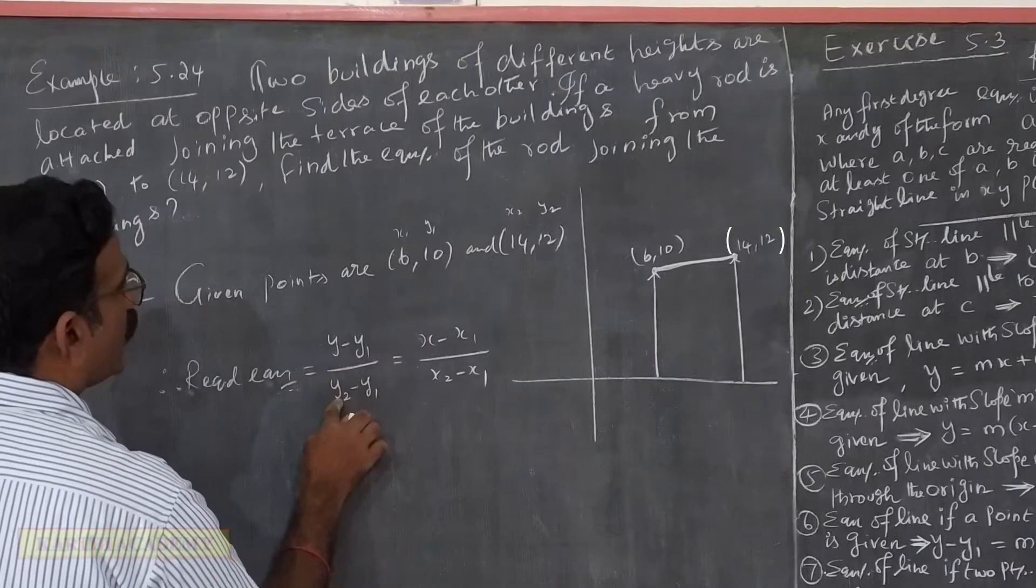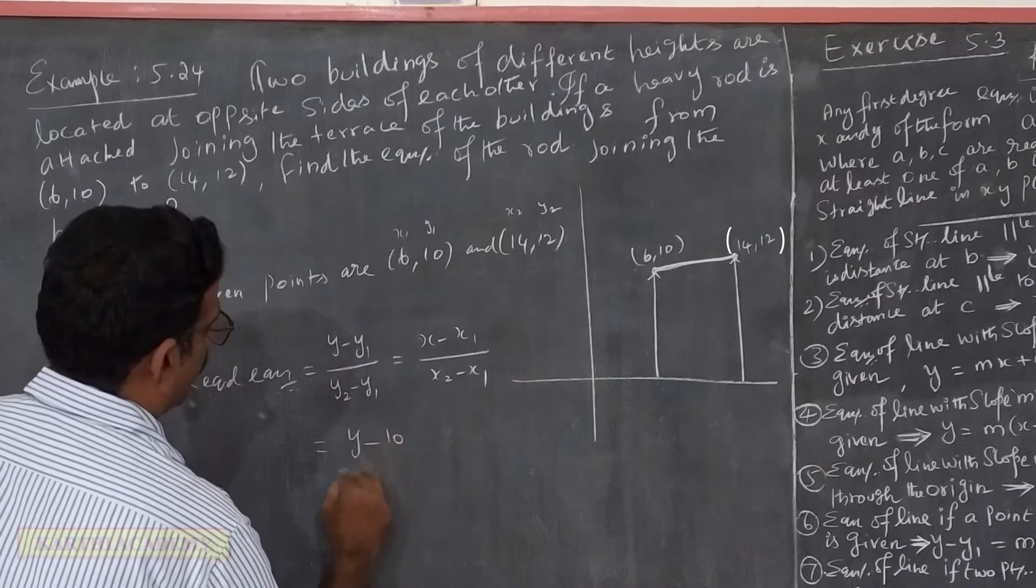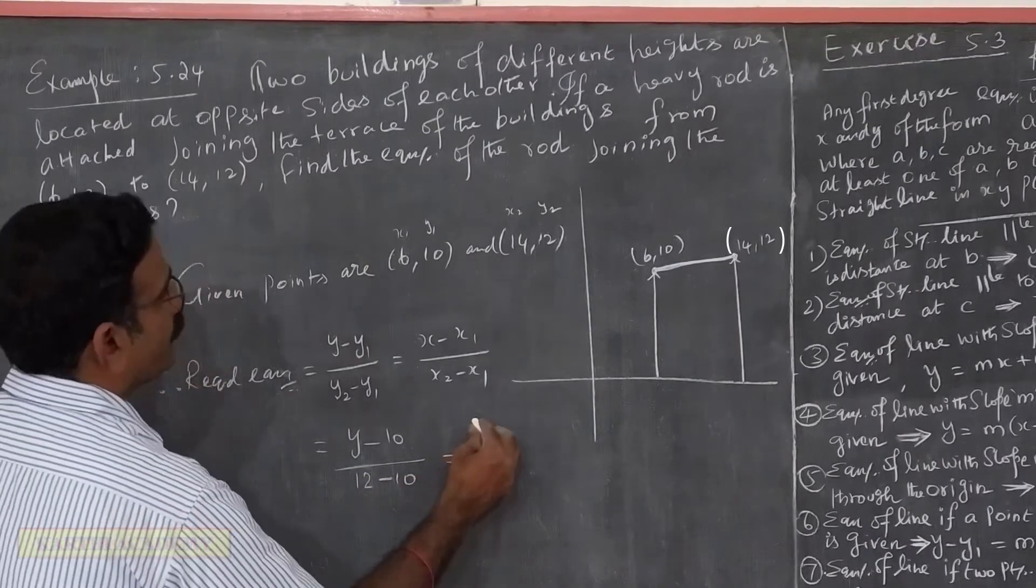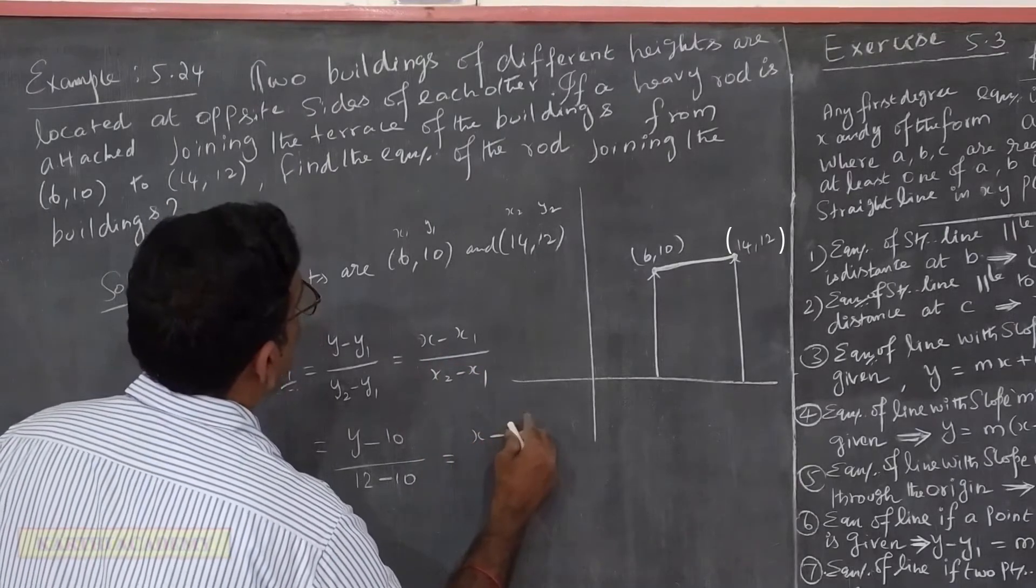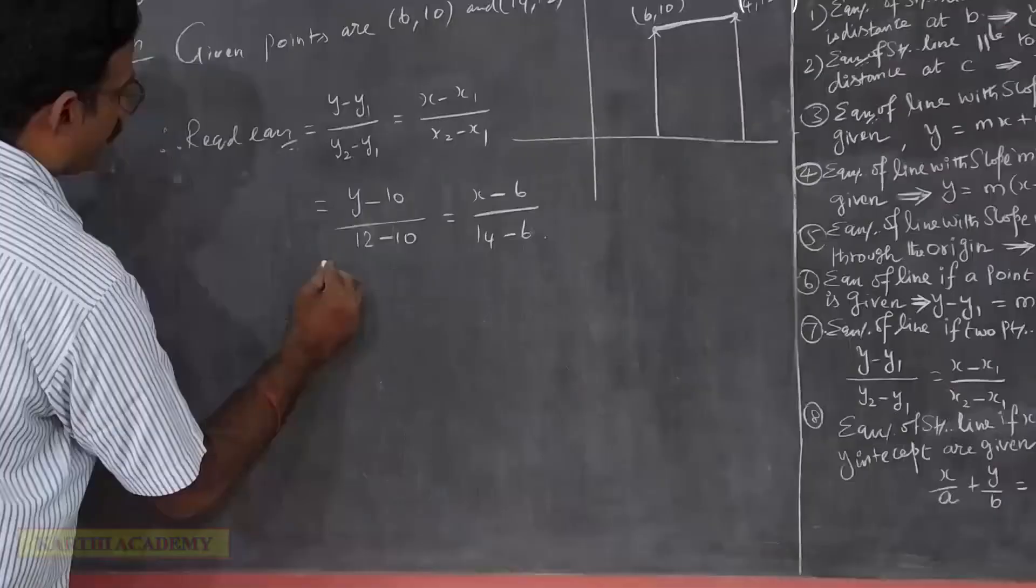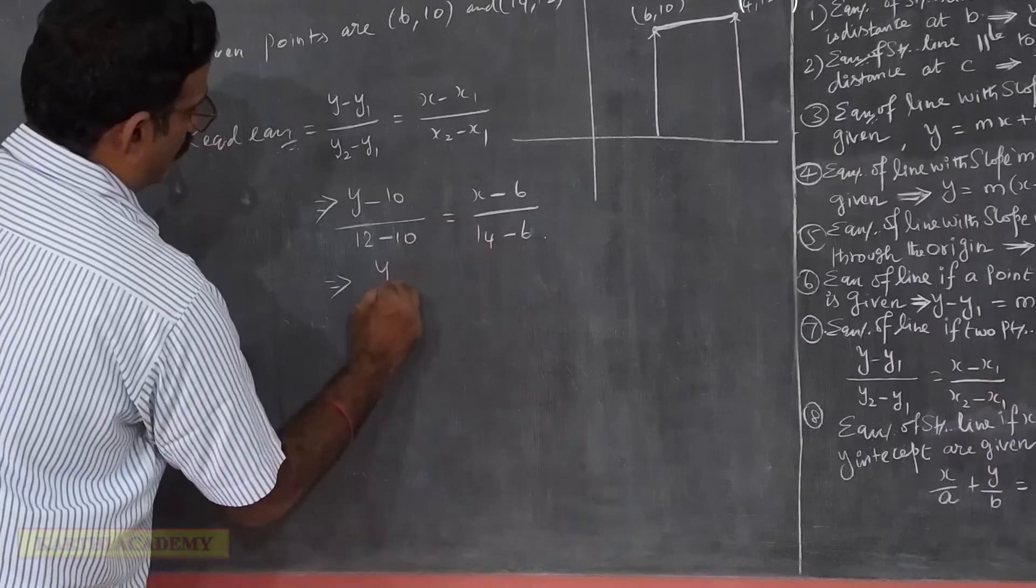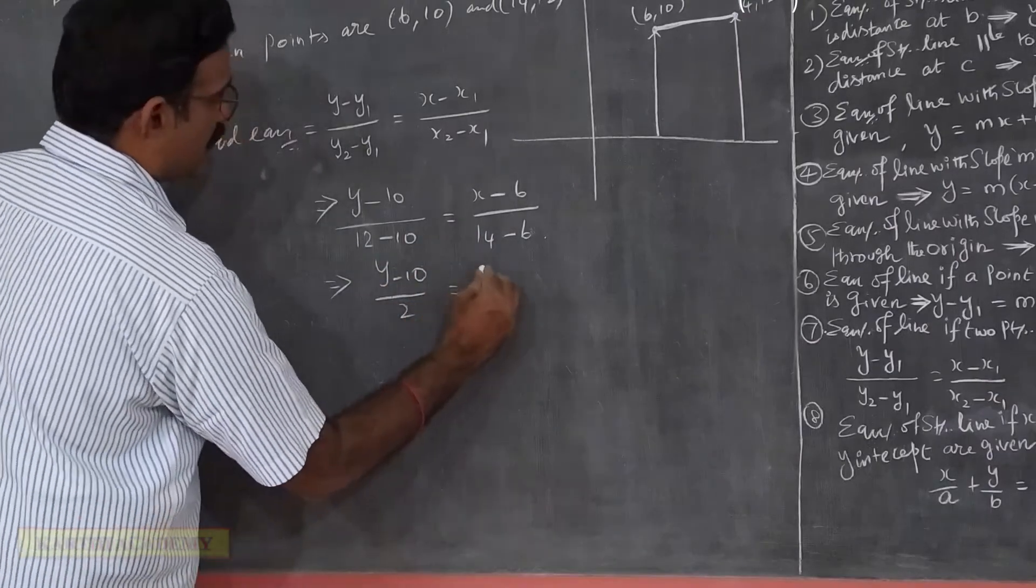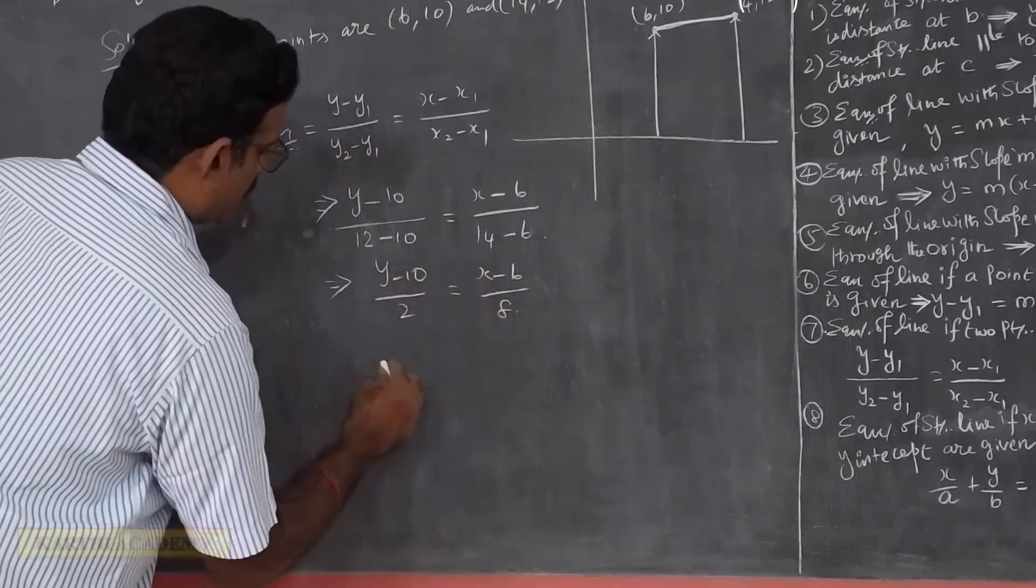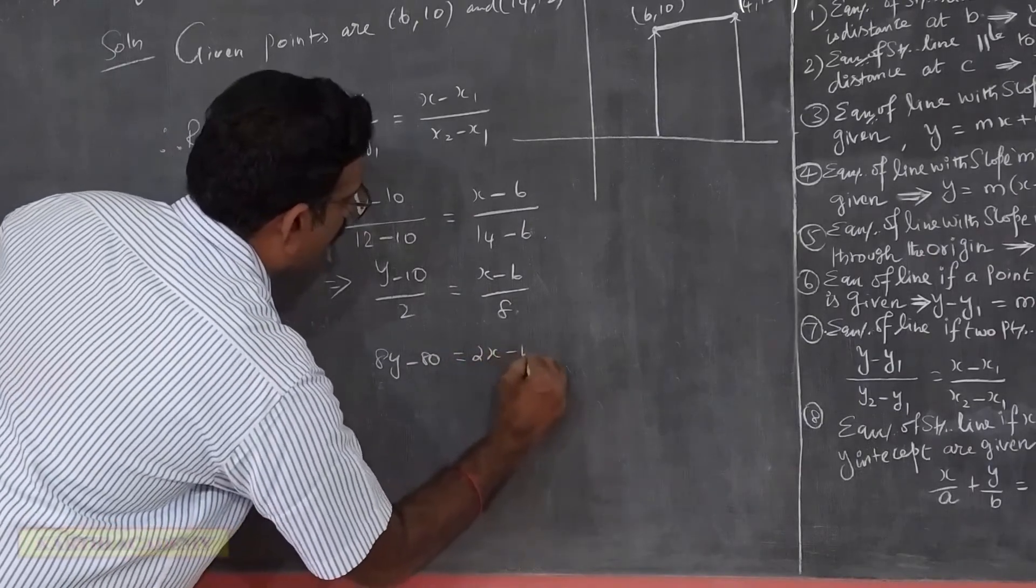We will substitute the values. So this gives us y minus 10 divided by 12 minus 10 equals x minus 6 divided by 14 minus 6. Cross multiplication gives 2x minus 12.